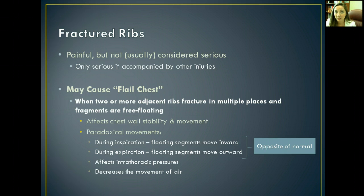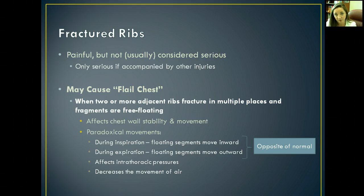Here's the phenomenon that can happen: you start noticing paradoxical movements within the chest. The word paradox means something that is opposite of what it should be. So paradoxical movements mean the chest is moving in opposite motion of what it should. Typically, when you breathe in the chest goes out, and when you breathe out the chest goes in. With paradoxical movements from flail chest, when you breathe in the chest goes in, and when you breathe out the chest goes out.